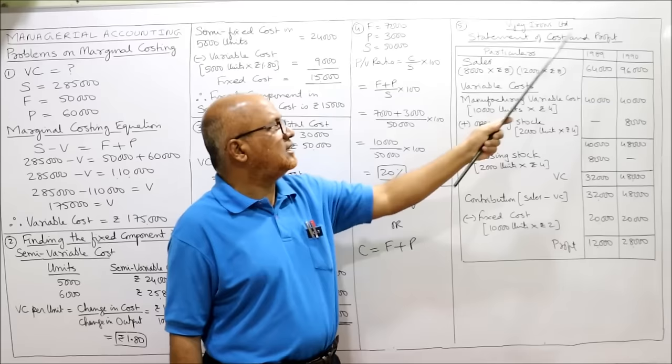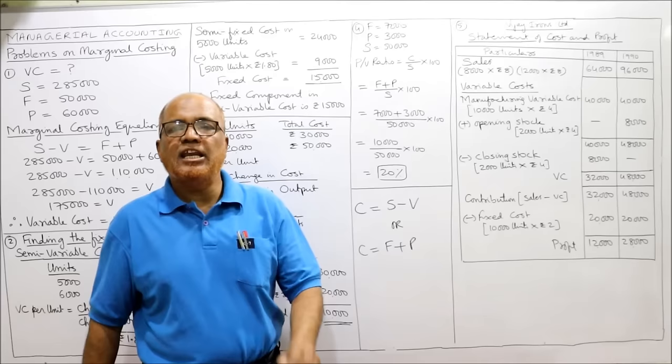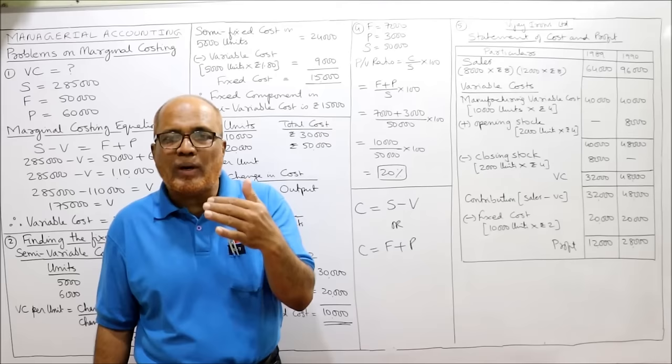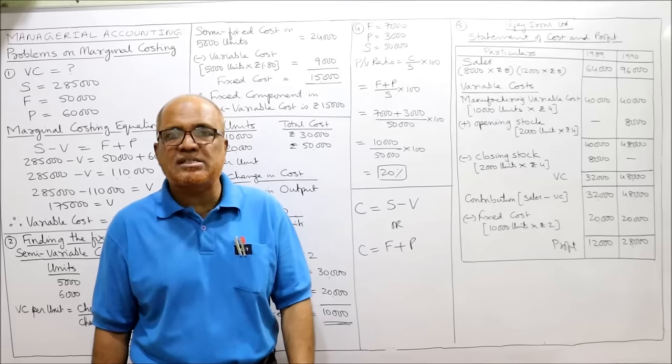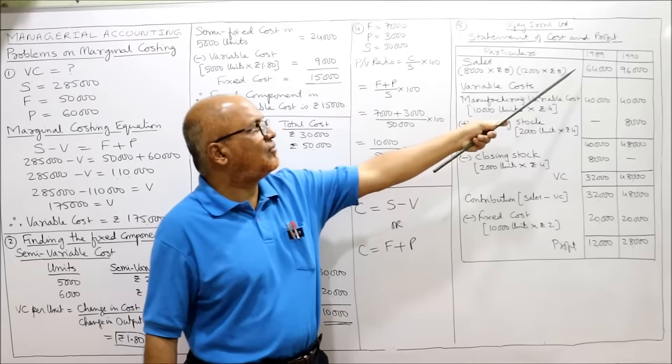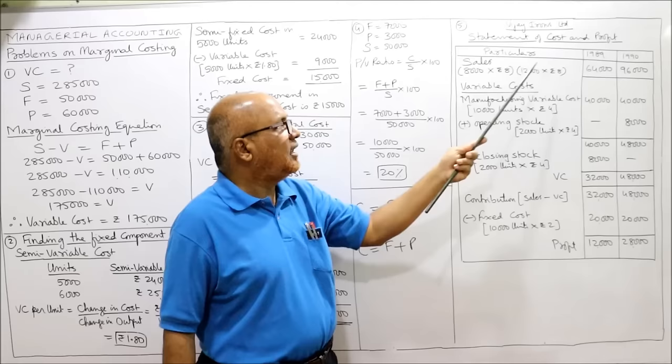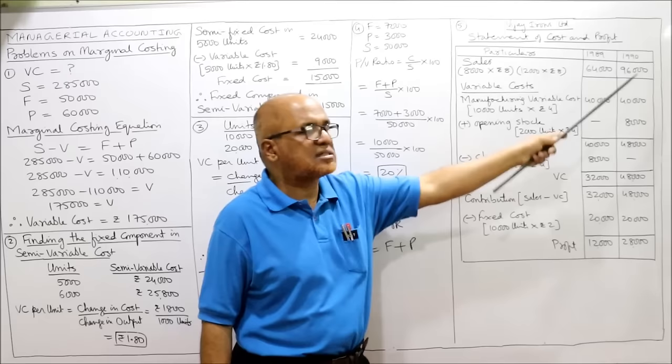Statement of cost and profit for 1989 and 1990. Sales: in 1989, 8,000 units × 8 rupees = 64,000. In 1990, 12,000 units × 8 rupees = 96,000.